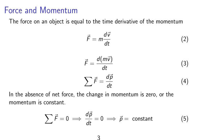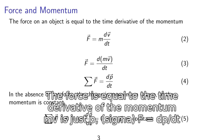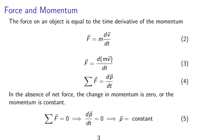Force and momentum. The force on an object is equal to the time derivative of the momentum. So we have f equals ma, which is m times dv dt, which can be expressed as f equals d times mv dt. But mv is just a quantity we define as p, so sigma f equals dp dt.